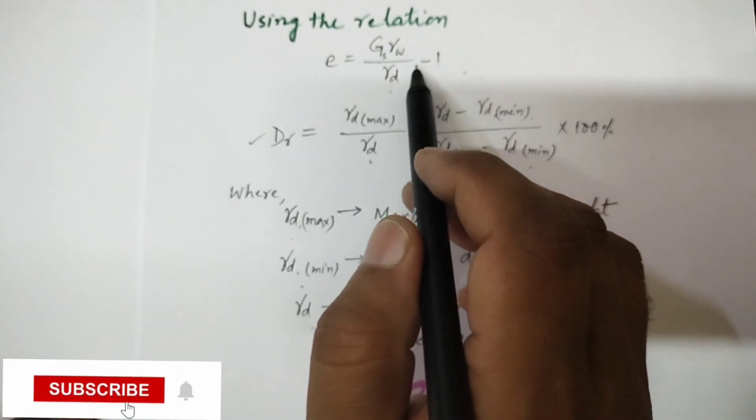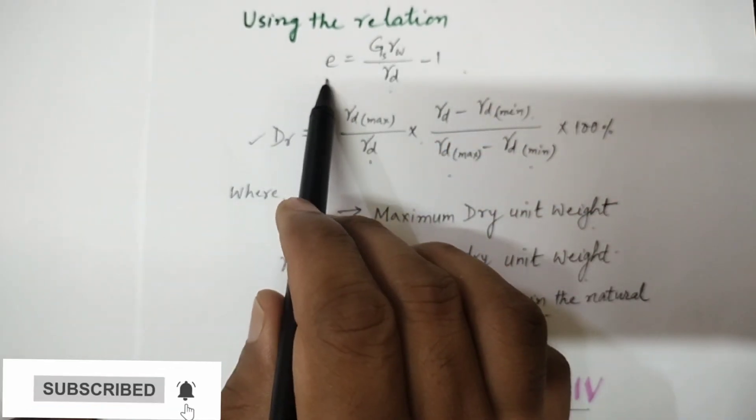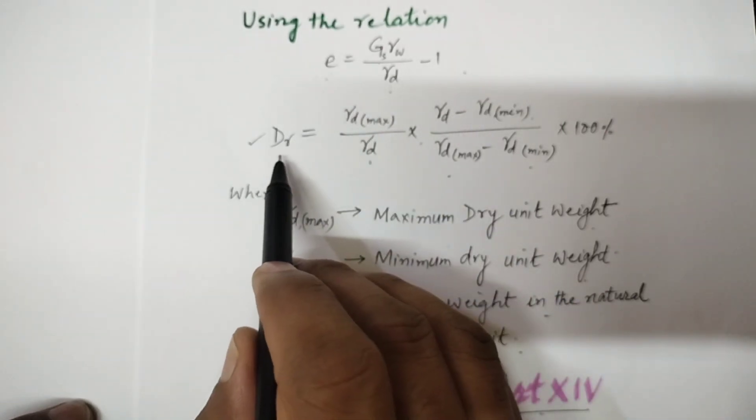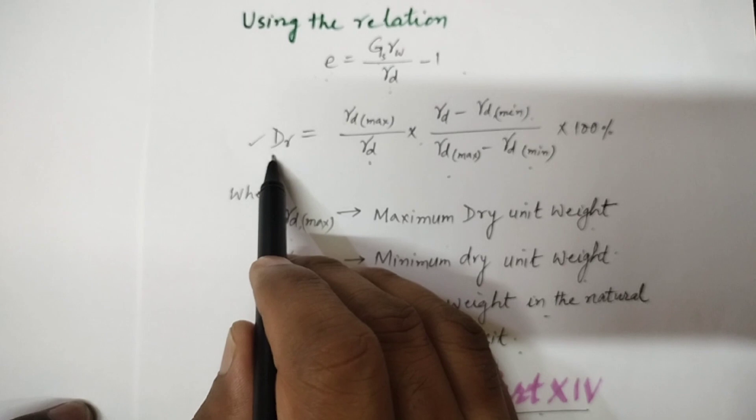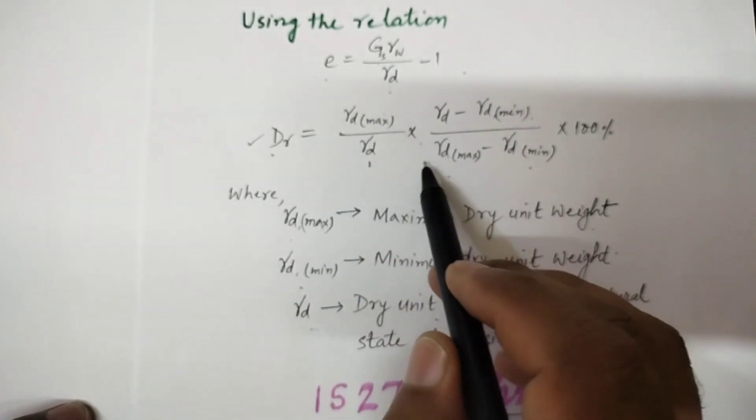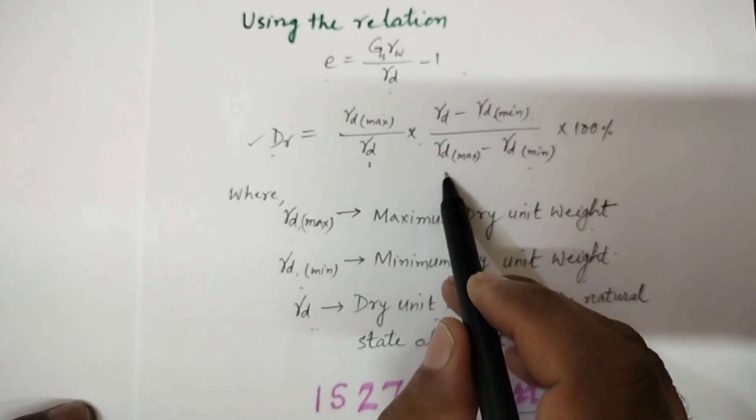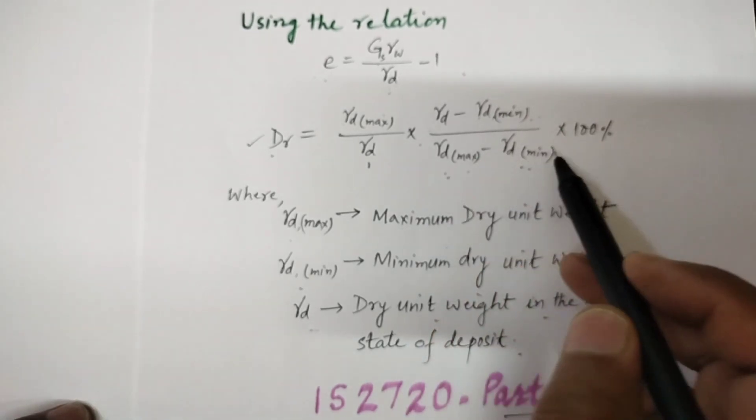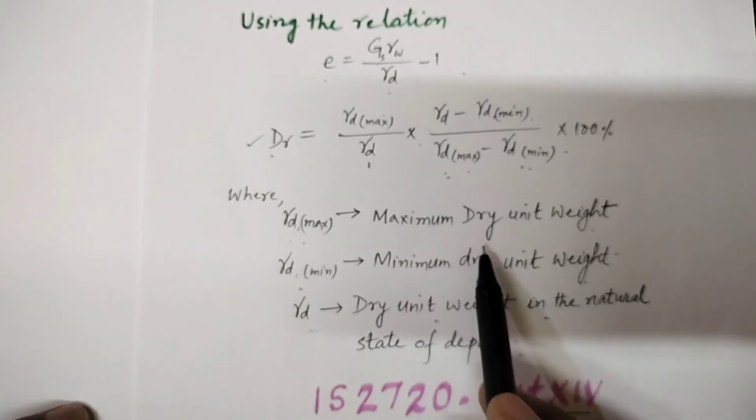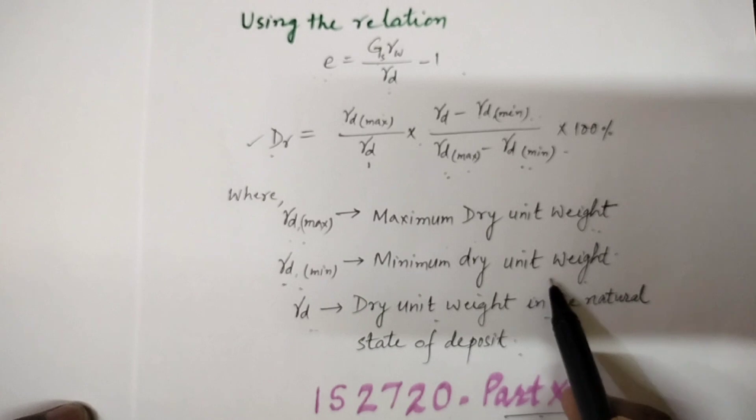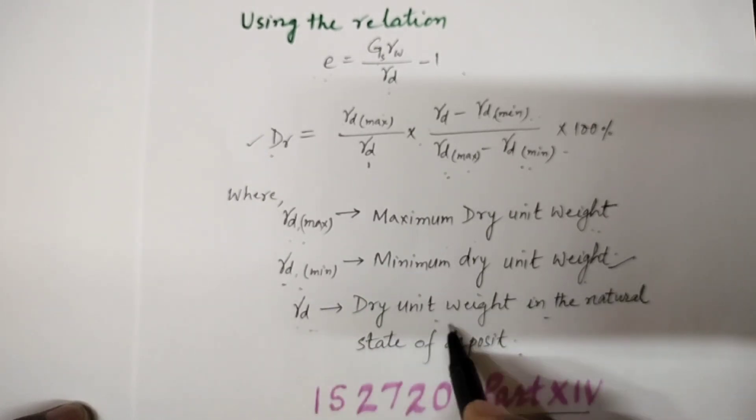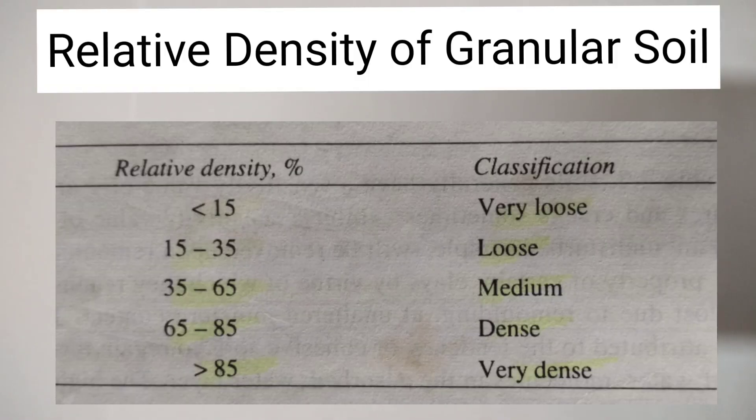If we use the relation E = (G_s × γ_w / γ_d) - 1, and put the value of E in the above equation, the relative density will be (γ_d_max / γ_d) × (γ_d - γ_d_min) / (γ_d_max - γ_d_min) × 100%. Where γ_d_max is maximum dry unit weight, γ_d_min is minimum dry unit weight, and γ_d is dry unit weight in the natural state. This test to find out relative density or density index is explained in Indian standard 2720 part 14.